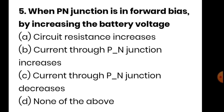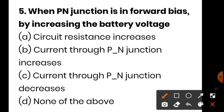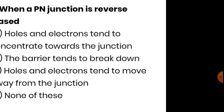Next question: when a PN junction is forward biased, what happens when the battery voltage is increased? Option A is circuit resistance increases. Option B is current through the PN junction increases. Option C is current through PN junction decreases. Option D is none of the above. When we increase the battery voltage in a forward-biased PN junction, the current through the junction increases, so option B is correct.